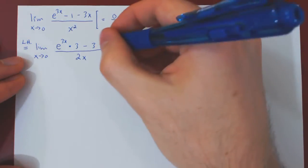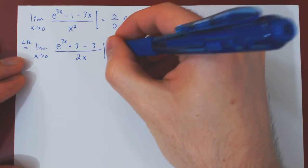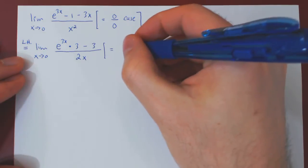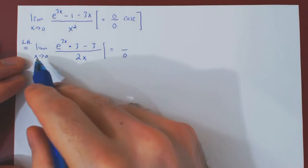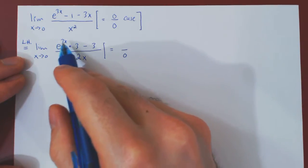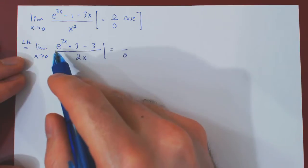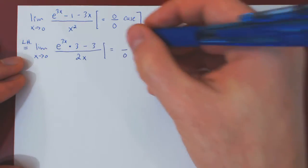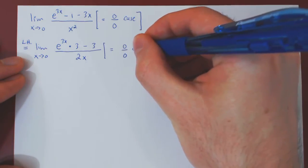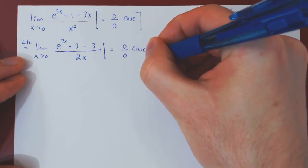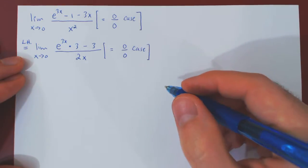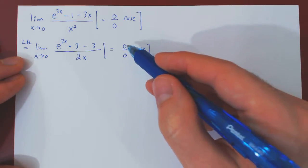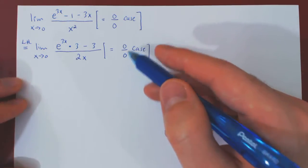Looking at our case again: as x goes to 0, 2x goes to 0. As x goes to 0, 3x goes to 0, e to the 0 is 1, so 1 times 3 minus 3 is 0. Once again we have an indeterminate 0 over 0 case, so we still don't know the limit, but we can apply L'Hôpital's rule again.